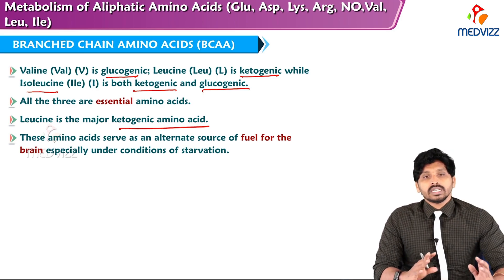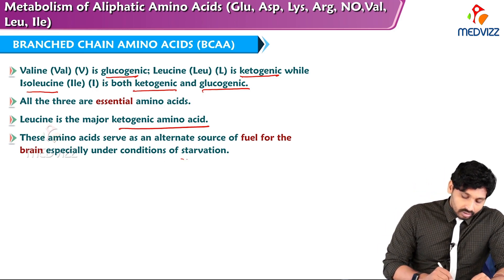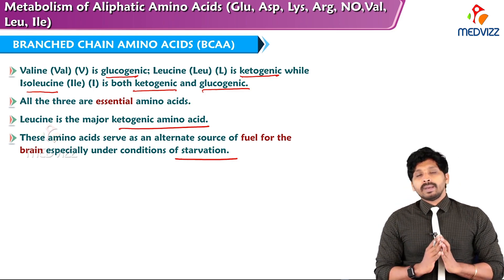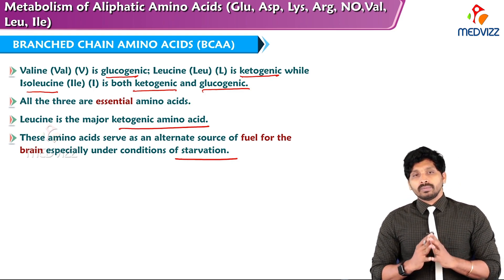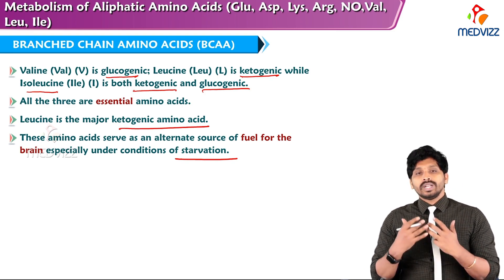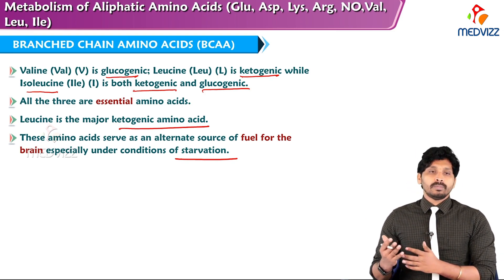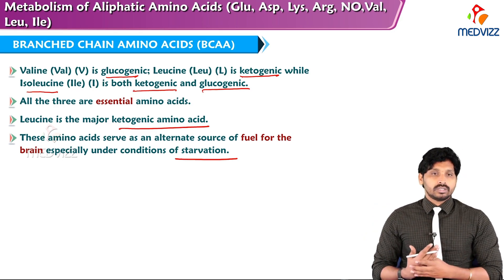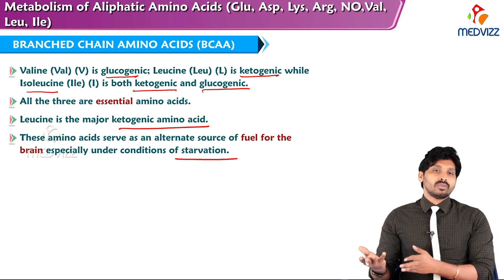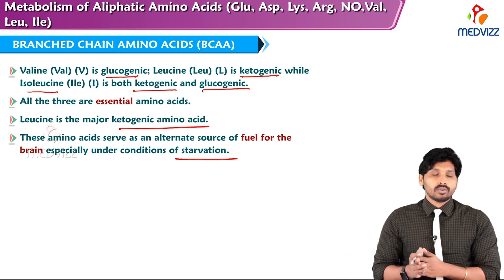These amino acids serve as an alternative source of fuel for the brain, especially under conditions of prolonged starvation. Because the blood-brain barrier apart from glucose does not allow any other substance to get in and produce energy, the alternate fuel to the brain is ketone bodies. That means leucine when it undergoes degradation forms ketogenic substances which enter the brain and produce energy.